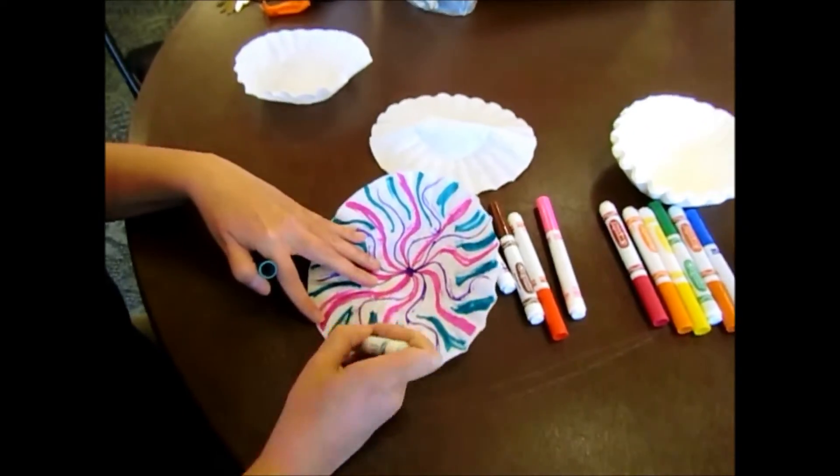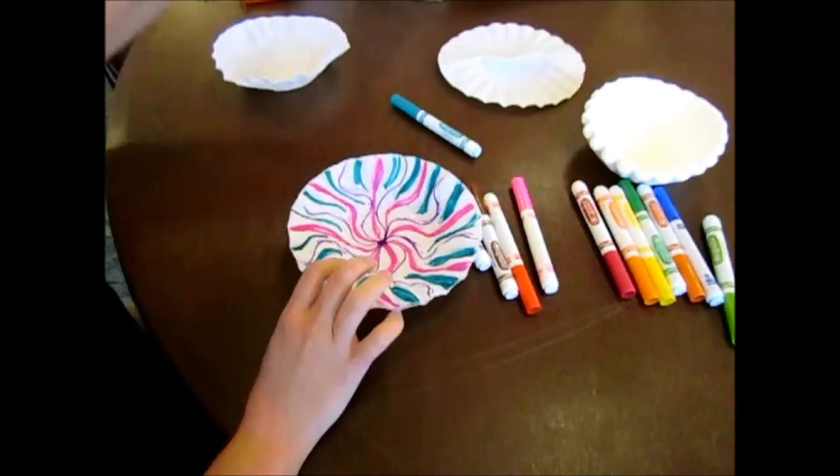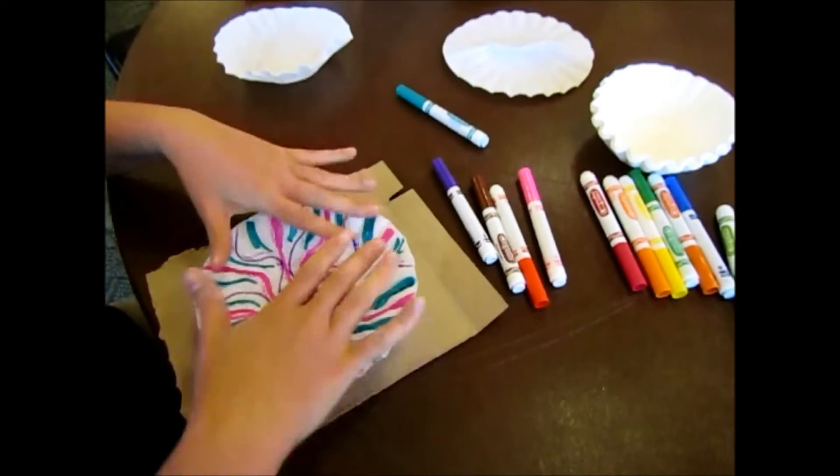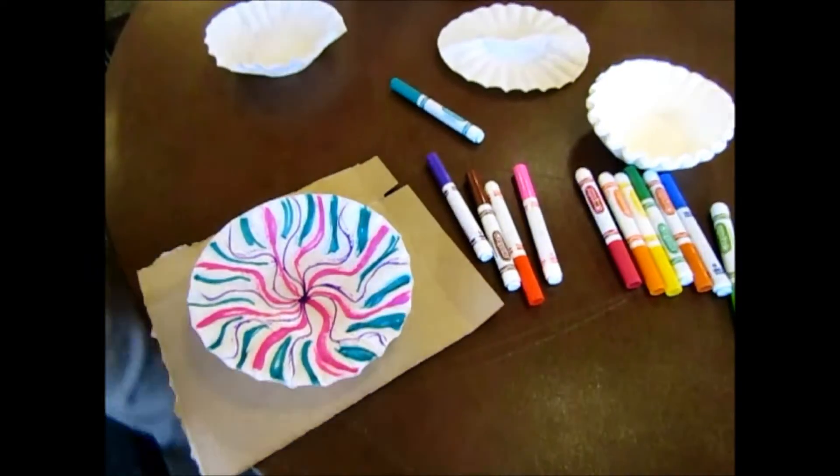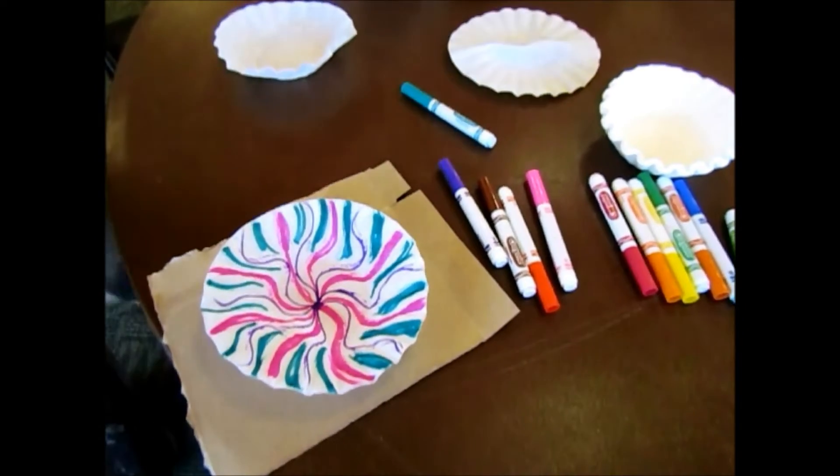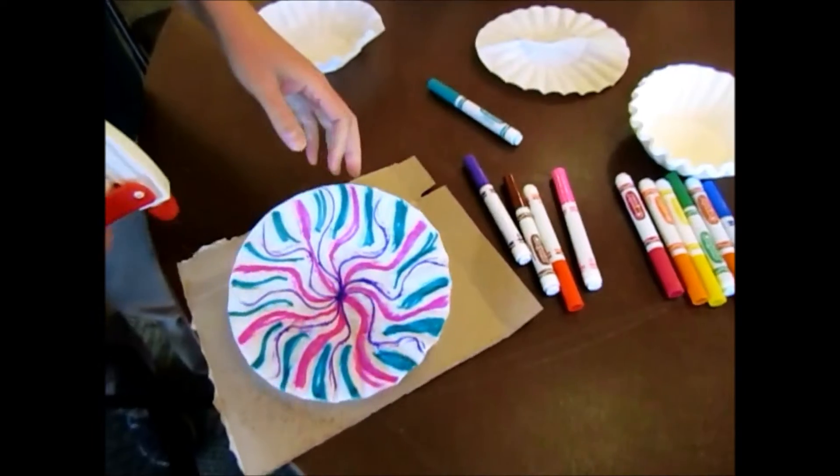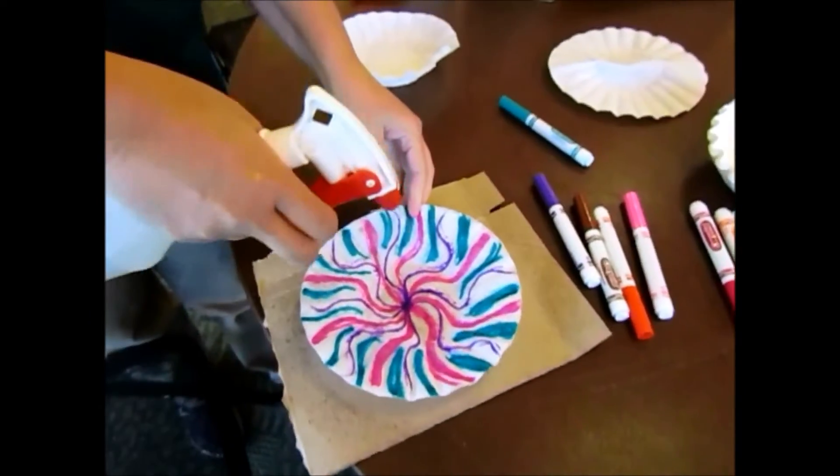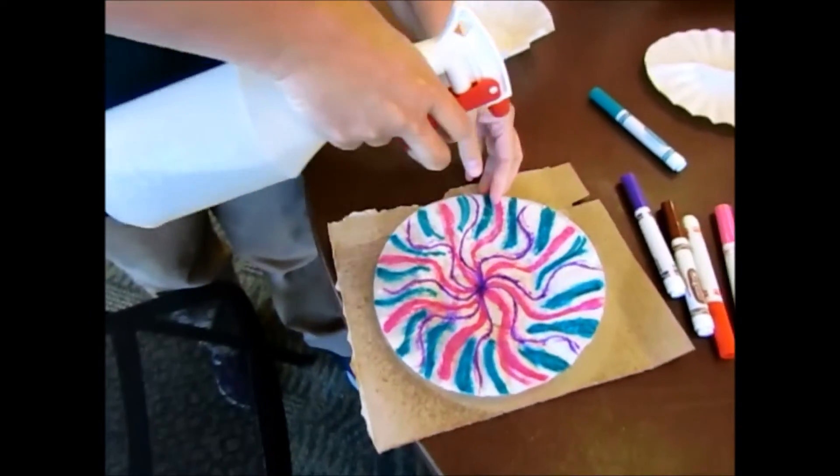After you're done coloring and you're pretty happy with your design, you're going to go ahead and put it on cardboard or a plate. Then you're going to take your water bottle and spray the surface, and that's going to blend the colors together and create that tie-dye look.